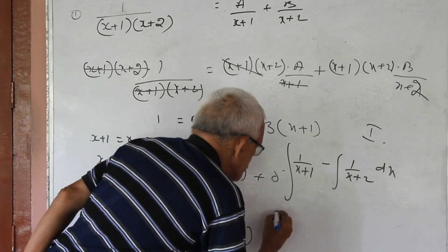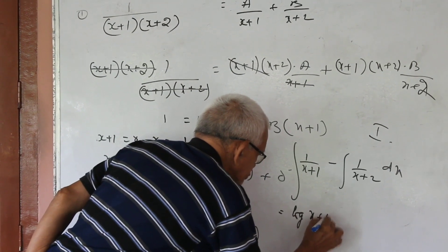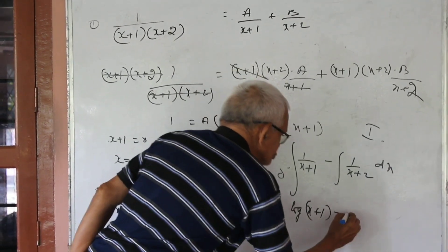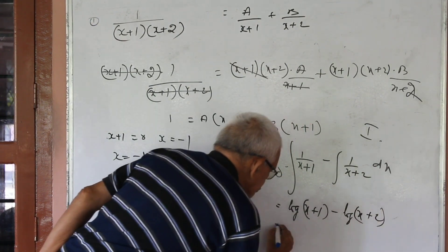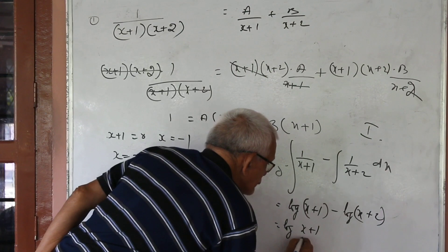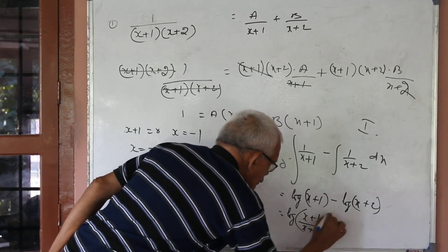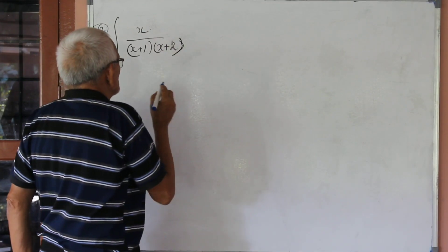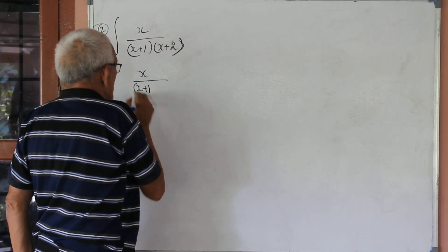The result is 1 by (x+1) minus 1 by (x+2). Integrating: log(x+1) minus log(x+2). Using log M minus log N equal to log (M by N).